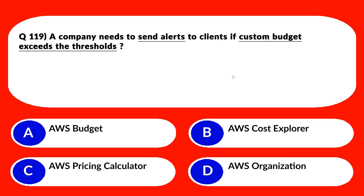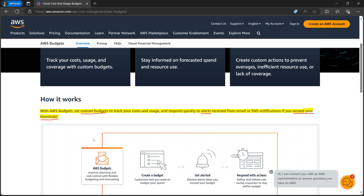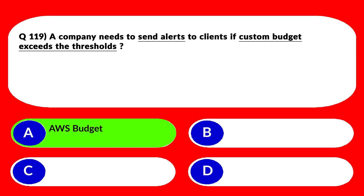Whenever you see keywords like 'exceeds the threshold' where you need to send alerts — any kind of alerts like email or SNS notification for questions related to cost — then think about AWS Budgets. Keep option A, AWS Budgets, and reject the rest. The official documentation says with AWS Budgets, set custom budgets to track your cost and usage and respond quickly to alerts. Note the keywords: receive alerts via email or SNS notification if you exceed your threshold. We'll lock option A as the correct answer.